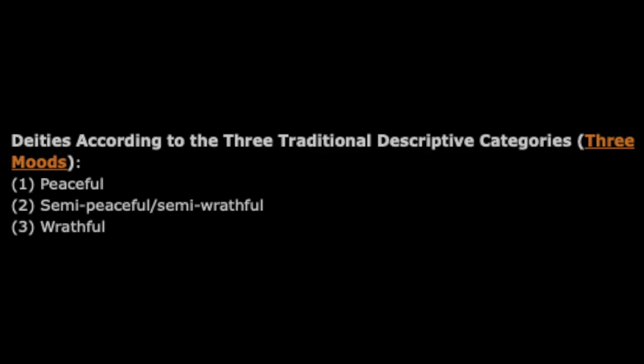For the categories based on function, we have a little bit of overlap with some of them, because we have the concept of peaceful, semi-peaceful, semi-wrathful, and wrathful, which is very common with the Sarma schools as a way of dividing deities. The Nyingma tradition and the Bön religion often don't stress the semi-peaceful and semi-wrathful categories — yes, they have them, but they don't stress them — and they often will only talk about peaceful and wrathful deities, such as the peaceful and wrathful of the bardo, or the peaceful and wrathful of the Guhyagarbha.